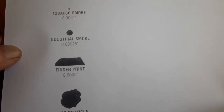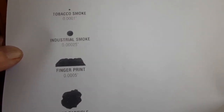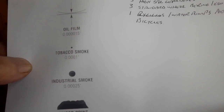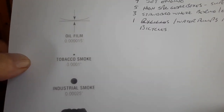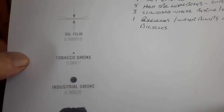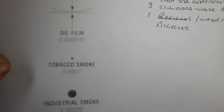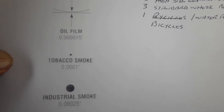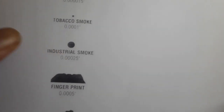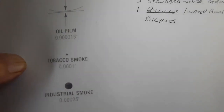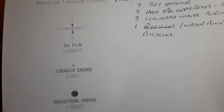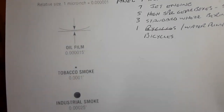Tobacco smoke is even smaller. The oil film on a precision bearing like in a gyroscope is between those lines on the diagram. So if you compare: touching the bearing with your finger, or having an industrial smoke particle or dust particle inside — that means total failure of that bearing. That is the truth.